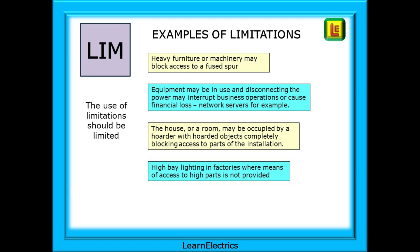There are justifiable reasons for limitations. Heavy furniture or machinery may block access to a fused spur. Or a room may be occupied by a hoarder with so many hoarded objects that they completely block access to parts of the installation. And high bay lighting in factories — perhaps 15 or 20 metres above your head — if high access is not possible, no scaffold tower, no cherry picker, and the client does not want to provide or pay for these, then inspection of those parts cannot be done.